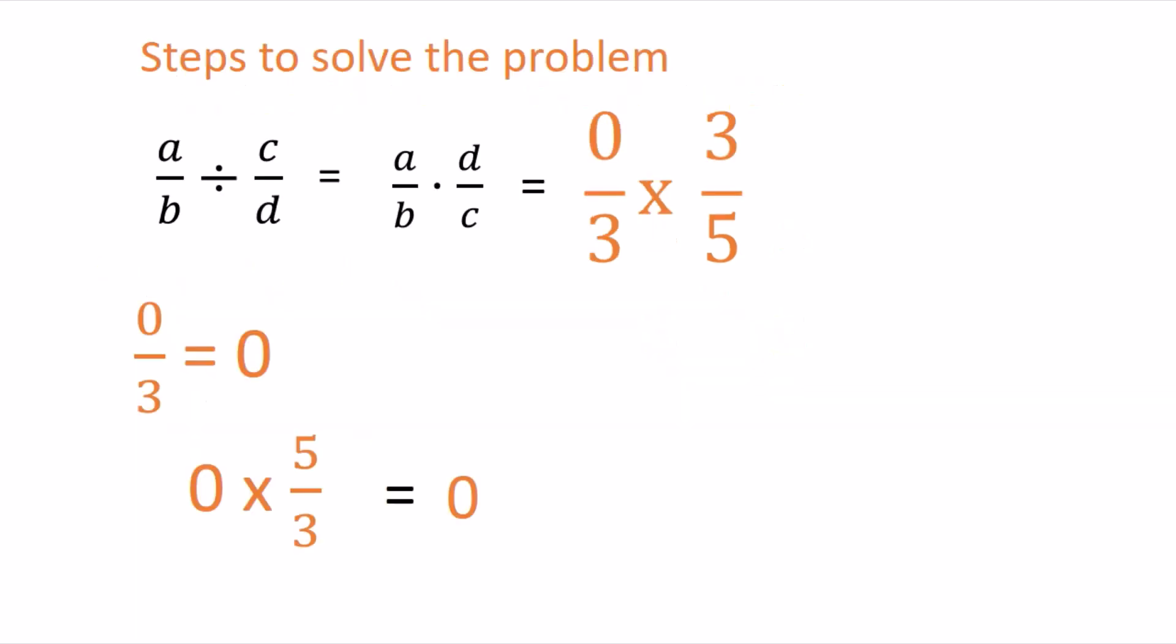So let's take a look. So a/b ÷ c/d equals a/b × d/c, which is our new problem. And when you divide 0 by 3, it becomes 0.